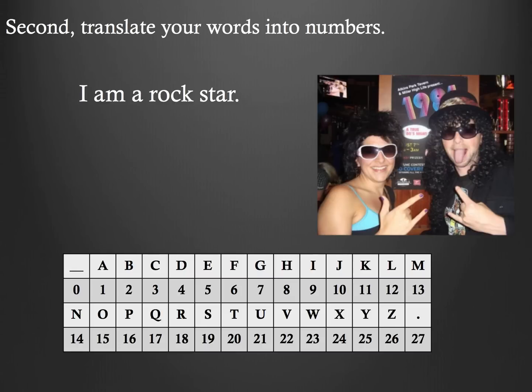Now, the second thing that we're going to do is translate our words into numbers. So, we're going to start out with this, I am a rock star. Yes, that is a picture of Mr. Muscarella, along with one of his favorite two sisters. That's my sister Maureen with me, and I was visiting her down in Atlanta.